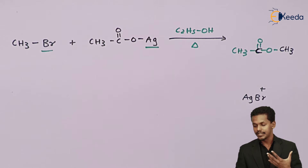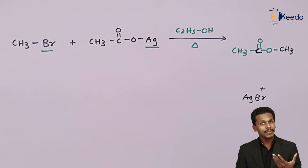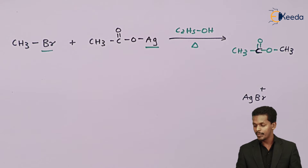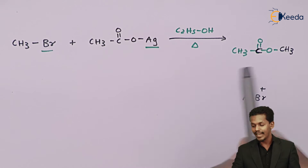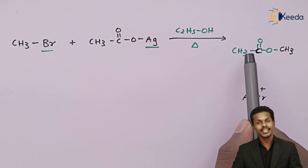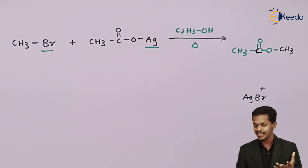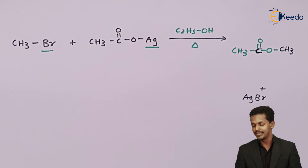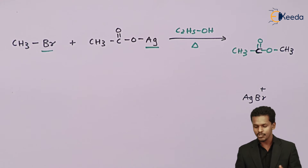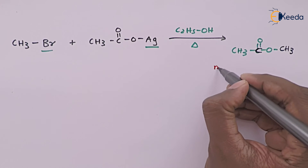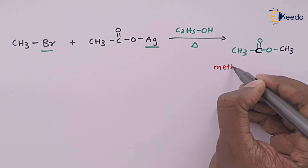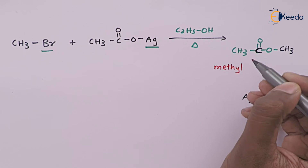Talking about the IUPAC name: the total number of carbons in the carboxylate group is 2, so the IUPAC name would be methyl ethanoate.